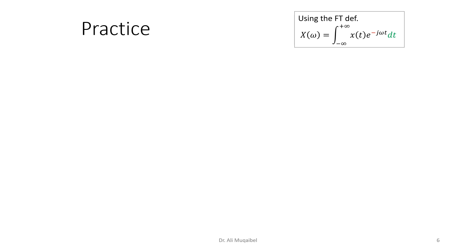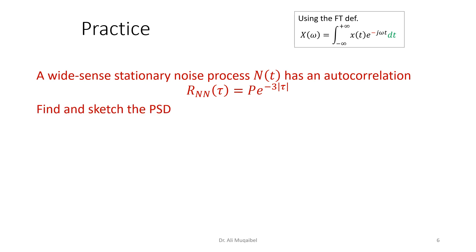Here is your practice. Please freeze this problem and try to answer in the notes or the comment section. This question says: a wide-sense stationary noise process N(t) has an autocorrelation R_NN(τ) = Pe^(-3|τ|). Find and sketch the PSD. The question uses the Fourier transform. The integral Fourier transform is shown here as a reminder, and it's your job now to execute this integration and get the answer.